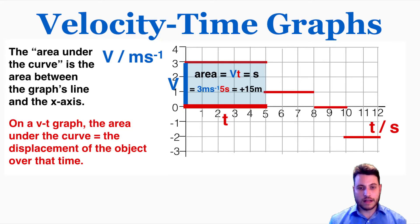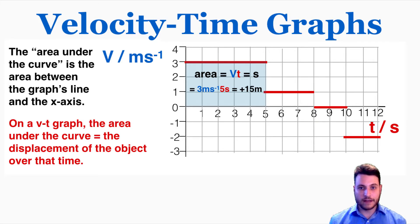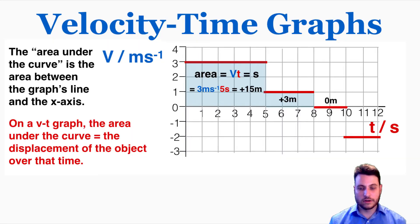When I multiply that out I can see that the area is 3 meters per second times 5 seconds, which is equal to 15 meters. So that area equals 15 meters — in that time of 5 seconds the object traveled positive 15 meters. This next area is equal to positive 3 meters: it's just 1 meter per second times the 3 seconds. This next part doesn't have any area under the curve between the line and the x-axis, so it travels 0 meters in that time.